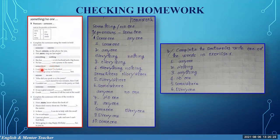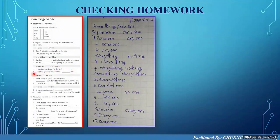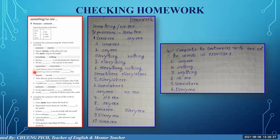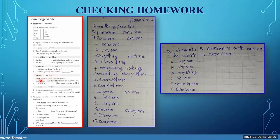Next we have 'somewhere' and 'everywhere.' Number five: 'I can't find my keys, I've looked everywhere' — which is correct. Number six: 'I want to go away on holiday somewhere hot.' Next we have 'anyone' and 'no one.' Number seven involves someone at a party.